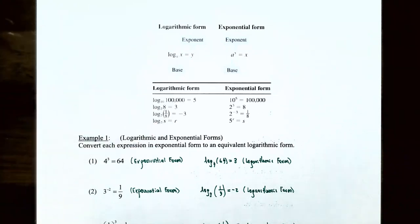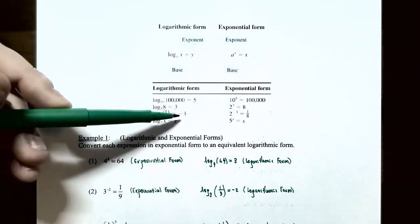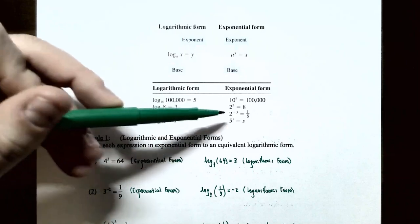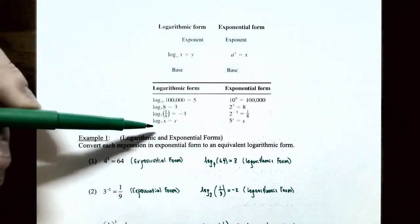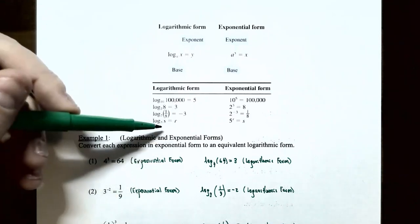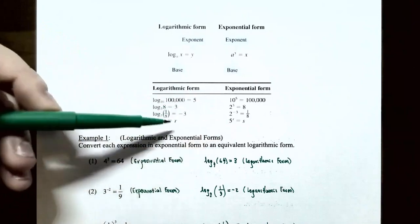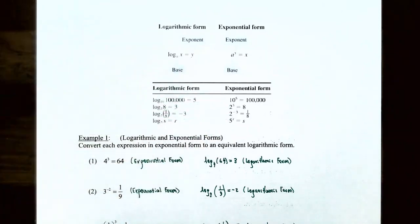For log base 2 of 1/8 = −3: raising base 2 to a negative exponent puts it in the denominator, so 2^(−3) = 1/2³ = 1/8. And log base 5 of s = r converts to exponential form as 5^r = s — the base stays the same, r is the exponent, and s is the argument.